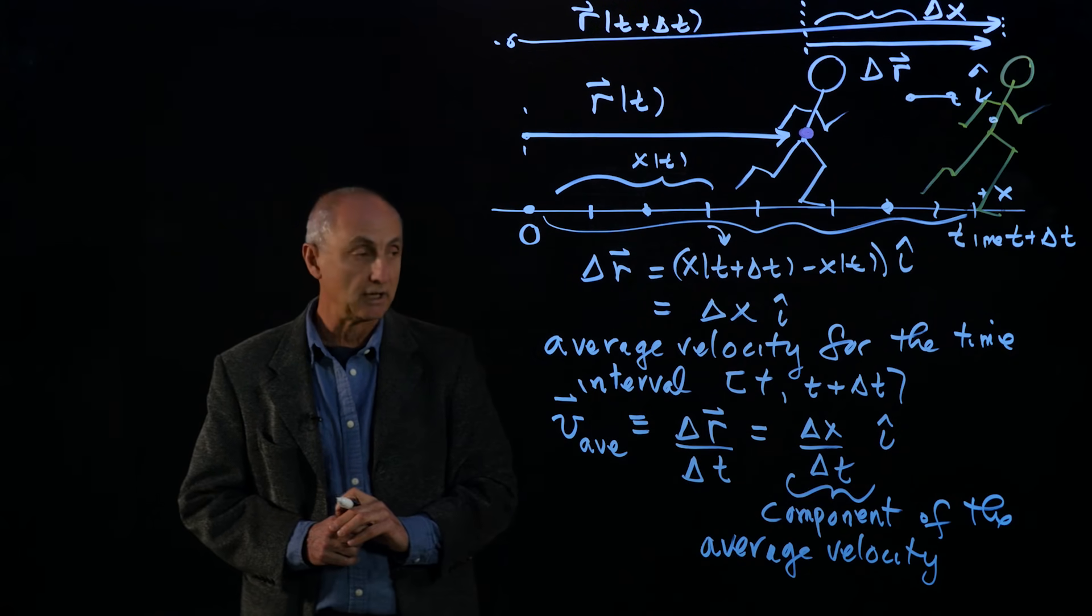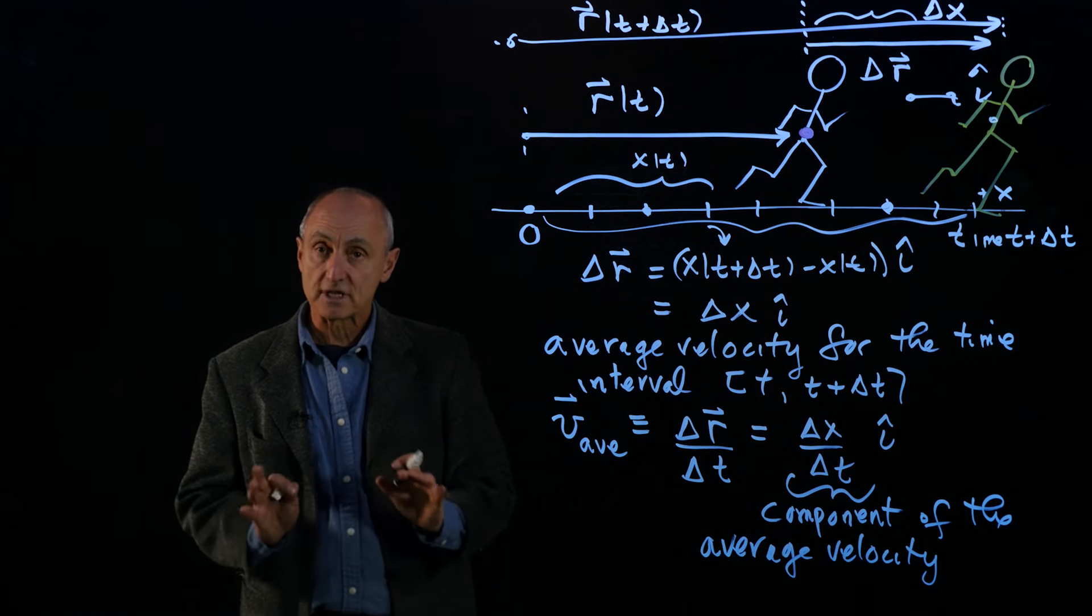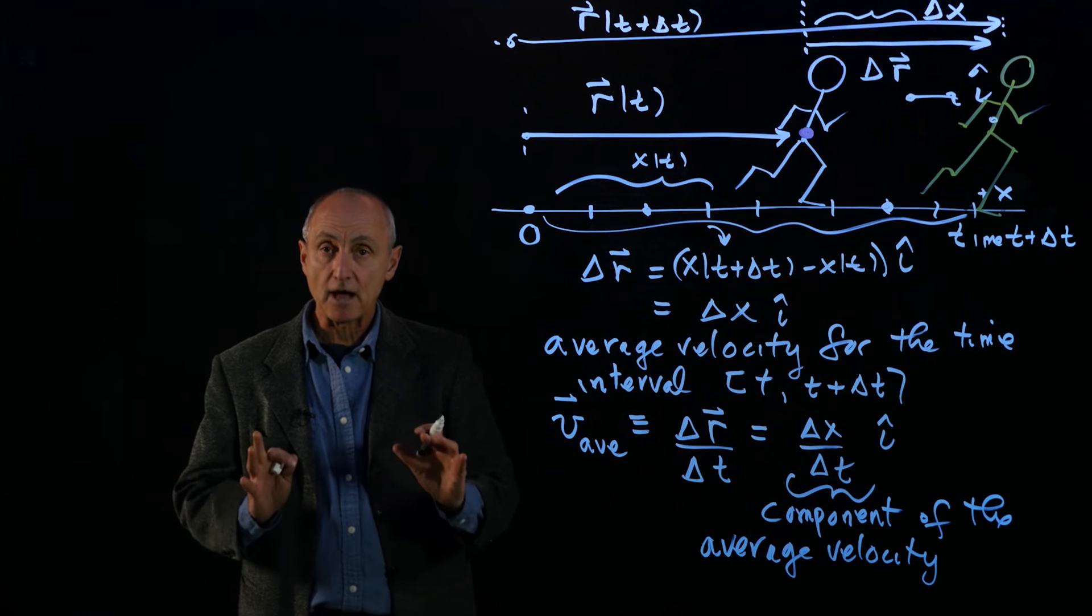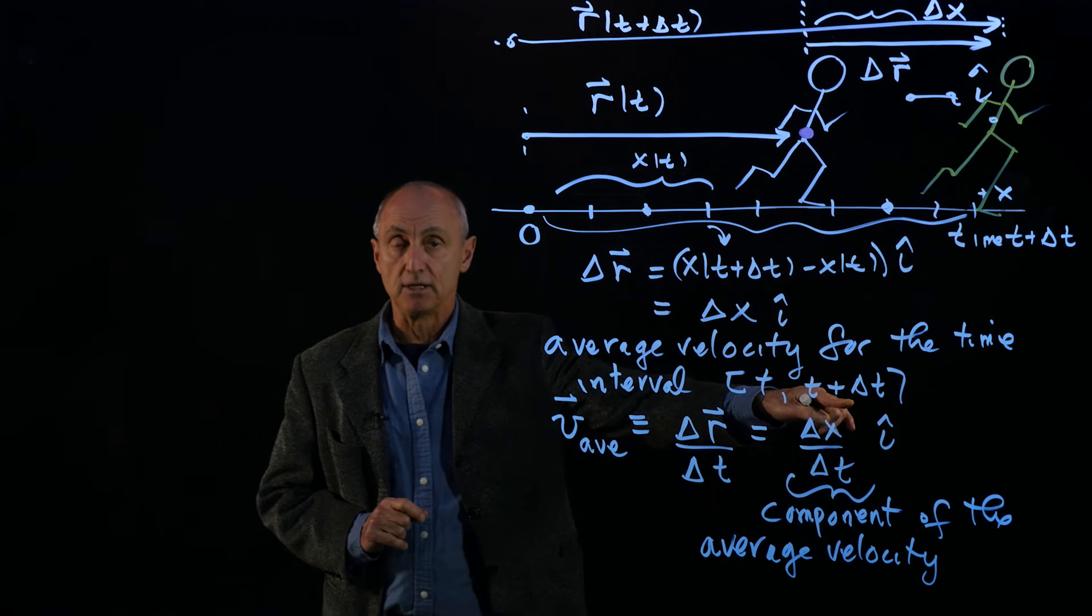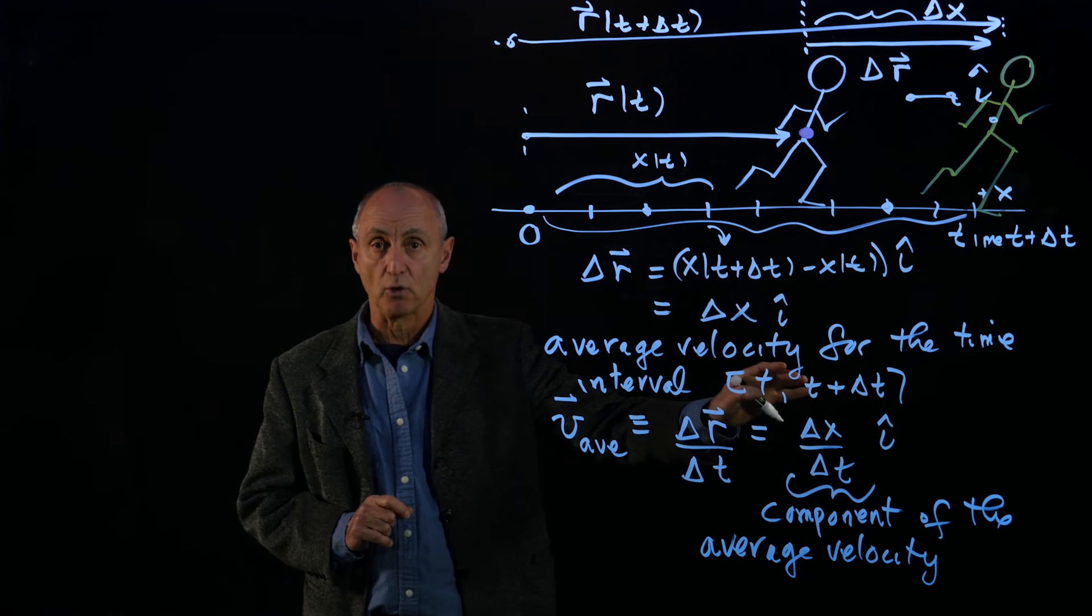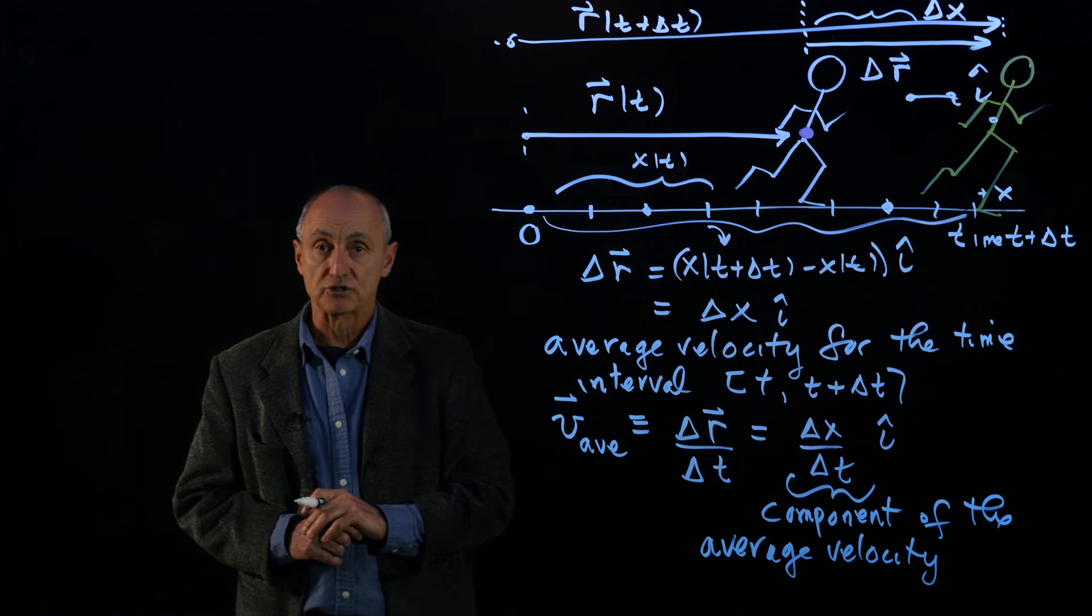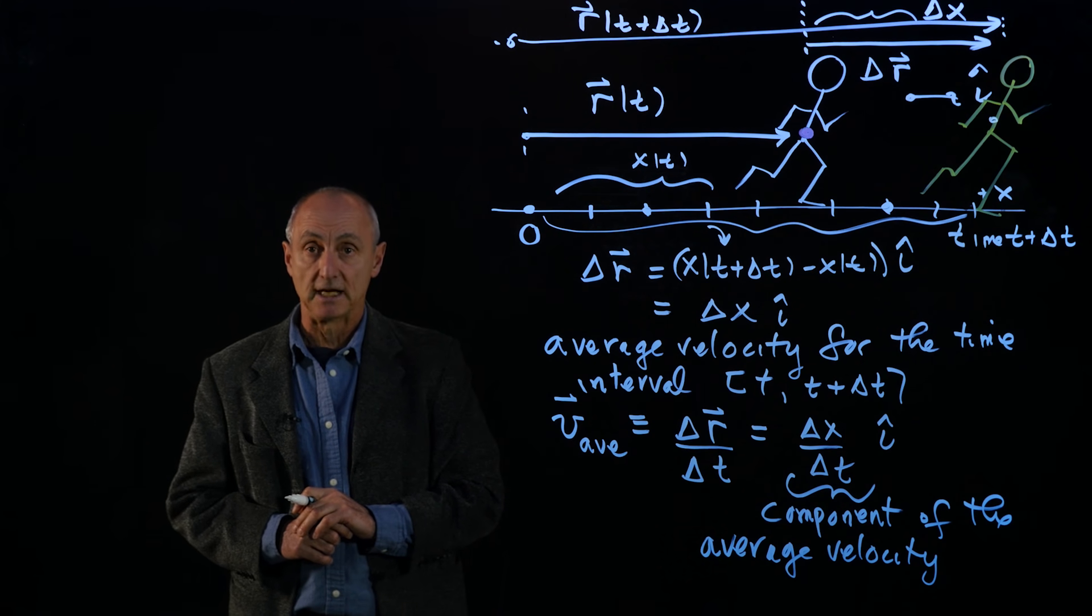And the key point here is that average velocity depends on whatever time interval you're referring to. So that's our definition of average velocity. And now what we want to do is consider what happens in the limit as delta t becomes smaller and smaller and smaller. And that will enable us to introduce our concept of instantaneous velocity.